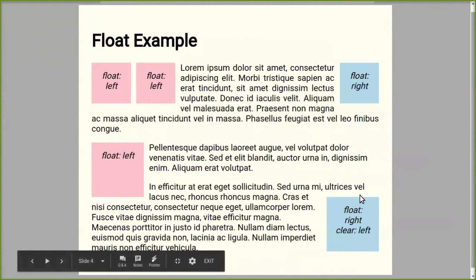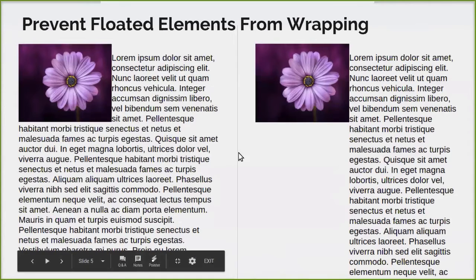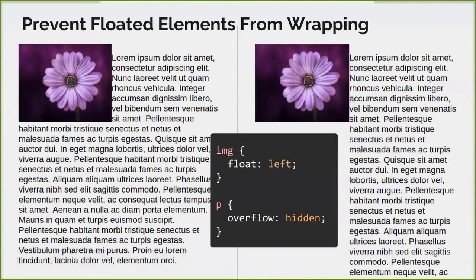I also want to show a trick we occasionally use in CSS: we can prevent floated elements from wrapping around text. On the right section here, we have an image and you'll notice the paragraph does not wrap around the image — there's empty space underneath it. This is useful, and a quick easy way to do it is to set the overflow property to hidden.